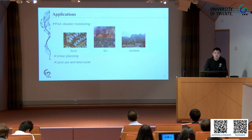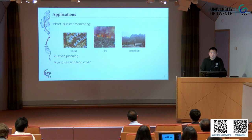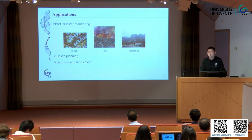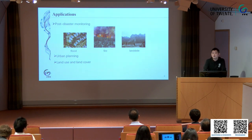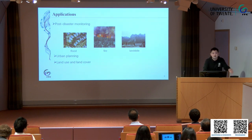Another potential application for this dataset is land cover analysis. As you can see, the VQA task questions could include sub-tasks and downstream tasks like segmentation, classification, recognition, or detection. So it could be used for land use and land cover — for example, you can ask questions like: 'How large is the area covered by tall trees or water sections?'